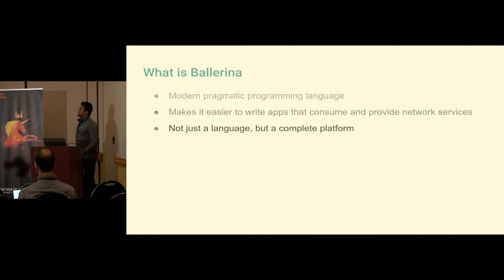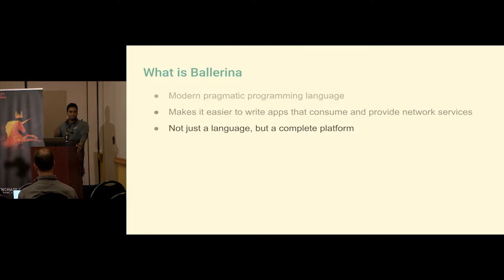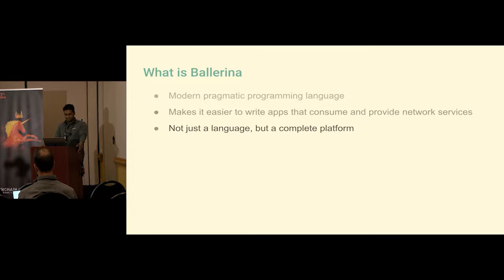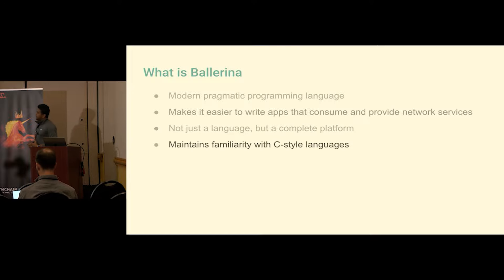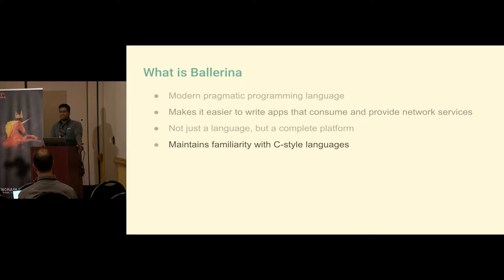Everything in the language is designed to support this goal — how we handle data, how we represent data, the type system design, concurrency design, network abstractions. It's not just a language; in modern language ecosystems the compiler alone is not enough. You need a package manager, build system, test framework, a way to share packages on the internet, and IDE support. It's not easy to come up with a new language today. Ballerina is a complete platform. Because we want it to be pragmatic and adapted, we maintained C-style syntax — if you're familiar with C, Java, Kotlin, or C#, you'll be familiar with Ballerina — though the semantics are very different.